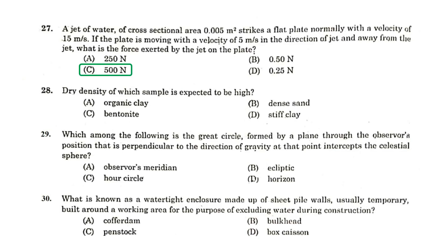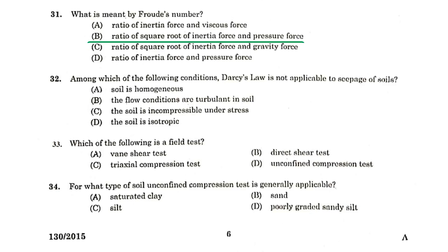Dry density of which sample is expected to be high? A dense sand. Which among the following is the great circle formed by a plane through the observer's position that is perpendicular to the direction of the gravity at that point intercepts the celestial sphere. Horizon. What is known as the water-tight enclosure made up of sheet pile walls, usually temporary built around a working area for the purpose of excluding water during construction. Cofferdam. What is meant by Froude's number? It is the ratio of square root of inertial force and gravity force. Among which of the following conditions, Darcy's law is not applicable to seepage of soil, if the flow conditions are turbulent in the soil.